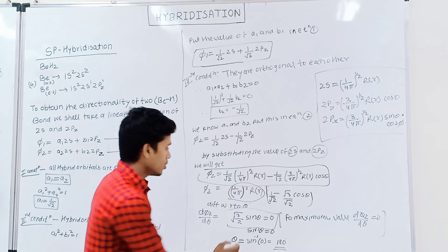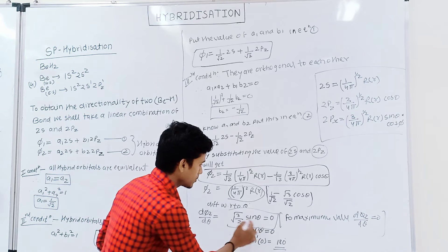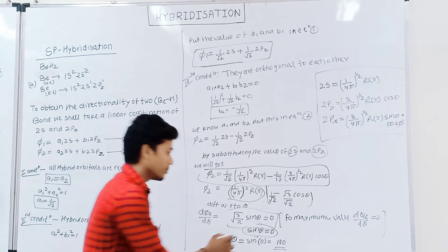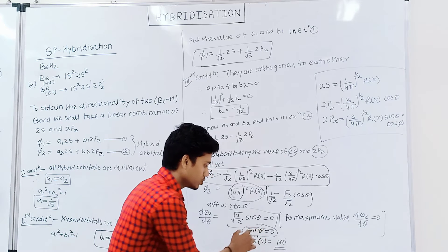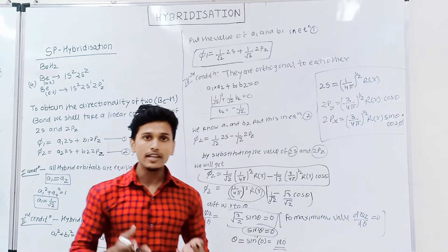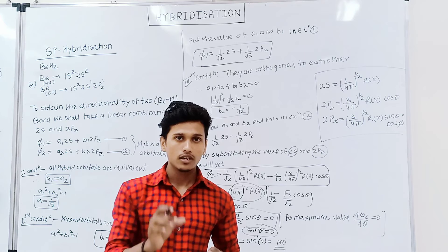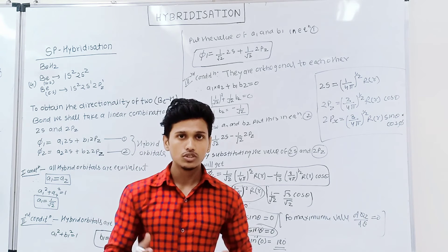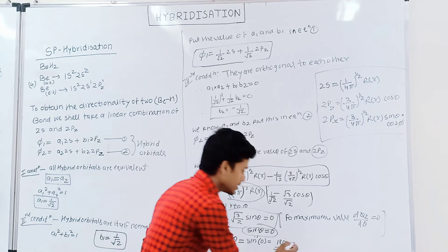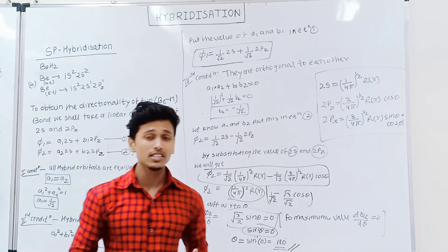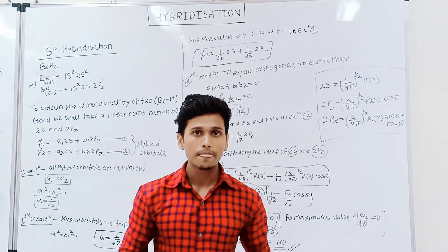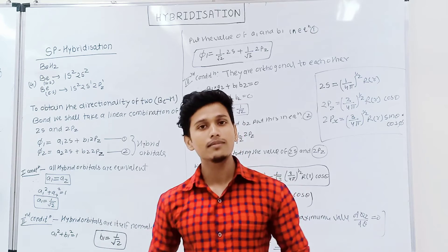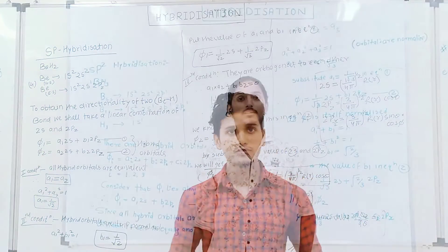Since d(phi2)/d(theta) equals zero at the maximum value, we get sin(theta) equal to zero. From here, sin(theta) equals sin⁻¹(0), and sin(180°) equals zero. So we have proved that the angle of SP hybridization is 180 degrees. The next topic is SP2 hybridization, which is going to be explained by George.